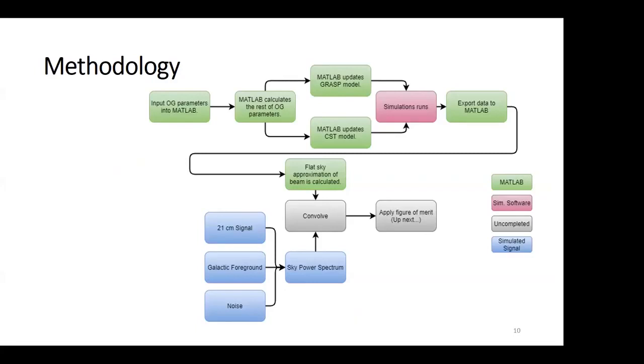Quickly going through the methodology to get to a place where I can apply a figure of merit for comparing these two antennas. For example, if you have the offset Gregorian, you'll choose your input parameters. The MATLAB script will then calculate the rest of the parameters.